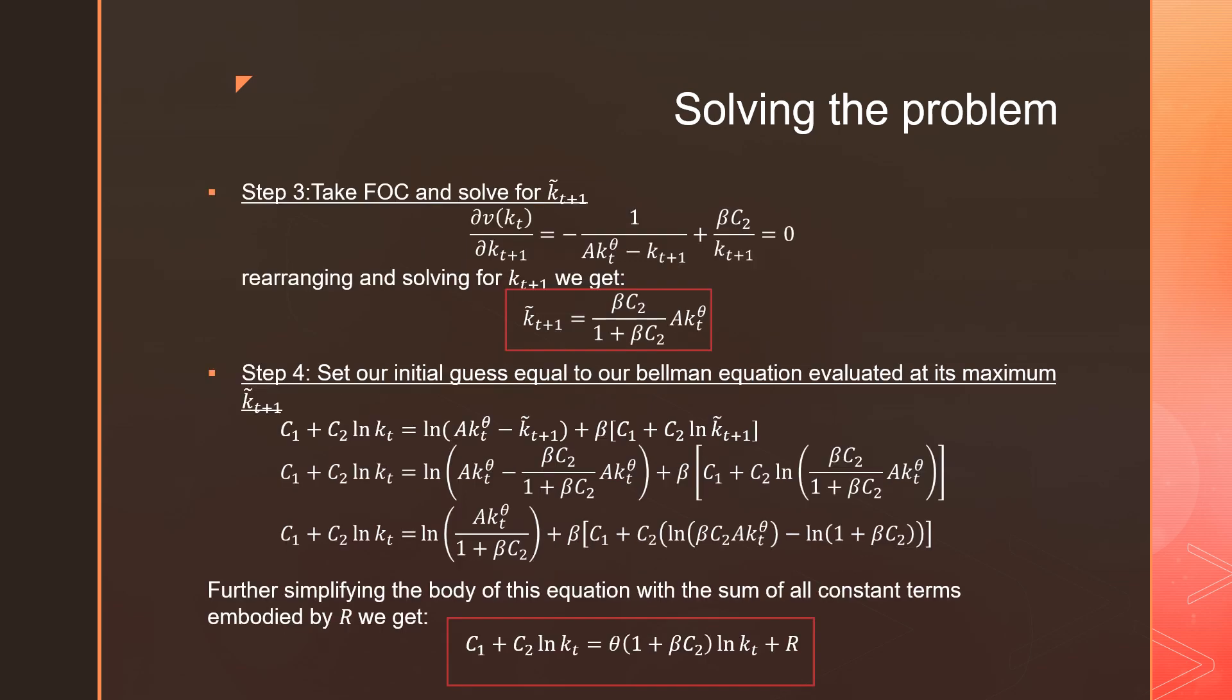So step number three is that we're going to take the first order conditions of this value function and solve for k_{t+1} tilde. Taking the first order condition as we see over here and rearranging, we get the following: k_{t+1} tilde is going to be equal to beta C_2 over 1 plus beta C_2 times Ak_t^theta.